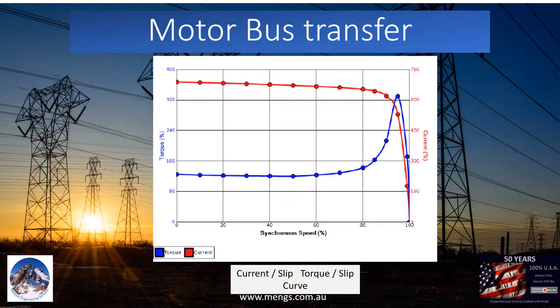As seen in the previous slide, motor speed will drop to lower than breakdown speed in about one second, depending on load and motor inertia. This means that in order to re-accelerate the motor after one second, we need to supply current close to lock rotor current. Lock rotor current in induction motors is about 5 to 8 times the full load current.